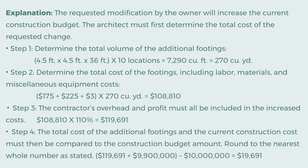Step 4: The total cost of the additional footings and the current construction cost must then be compared to the construction budget amount. Round to the nearest whole number as stated: $119,691 + $9,900,000 − $10,000,000 = $19,691.